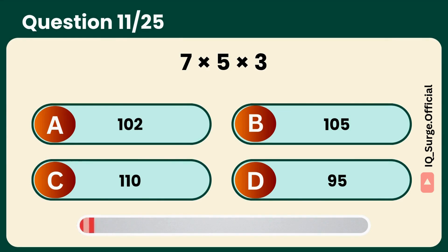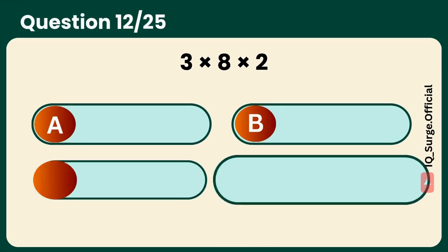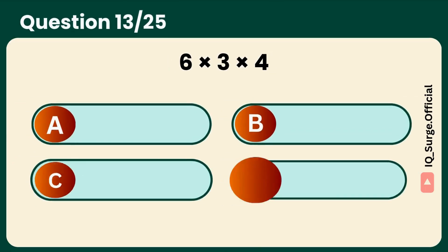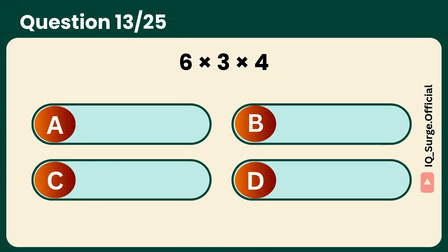What is 7 times 5 times 3? Think quickly, time's ticking. Answer: B, 105. What is 3 times 8 times 2? Short and sweet one. Answer: C, 48.